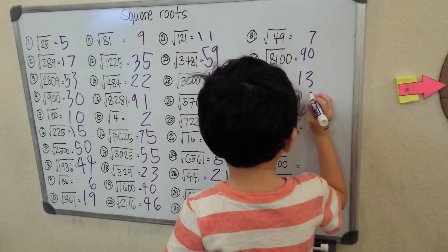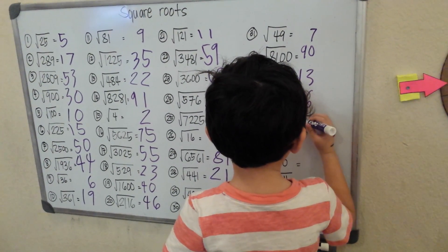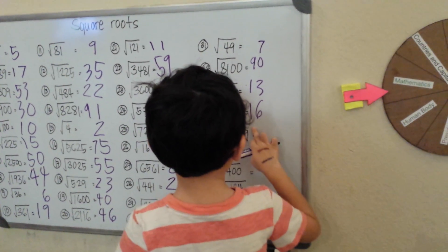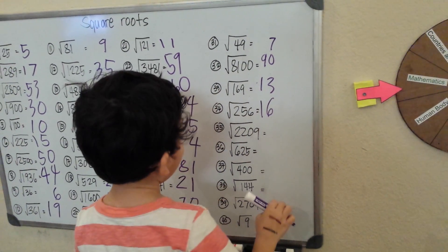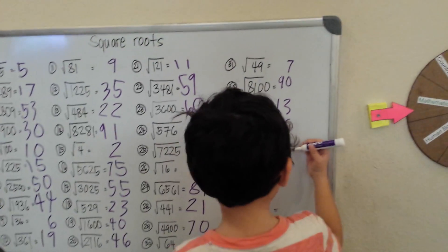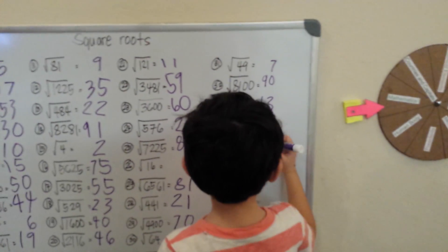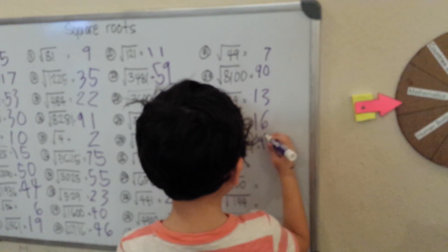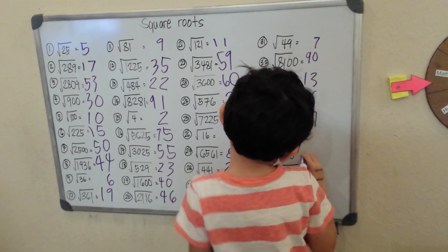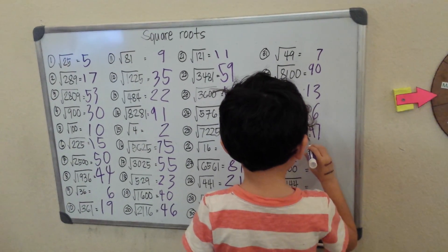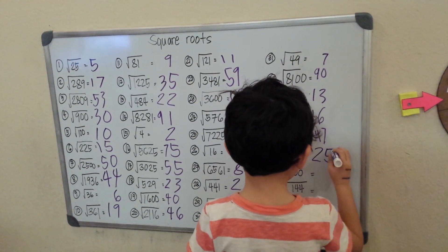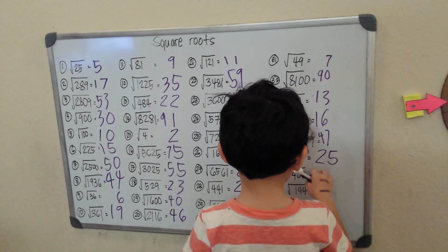I know this one is 16. Square root of 22098 — let me think — oh it's 47, I remember. Square root of 625, it's 25, I guess so — it's 25 to 6.